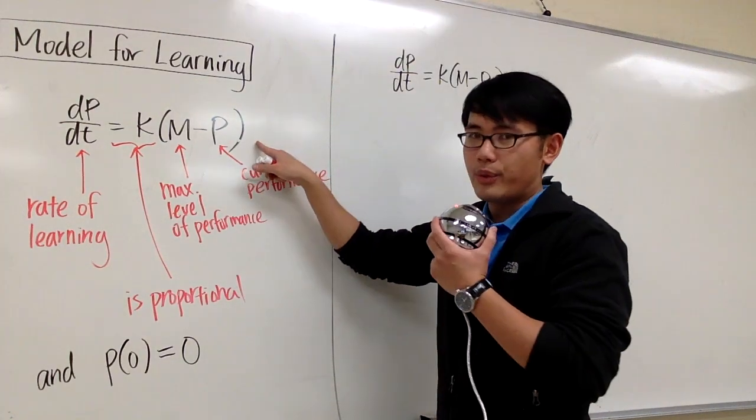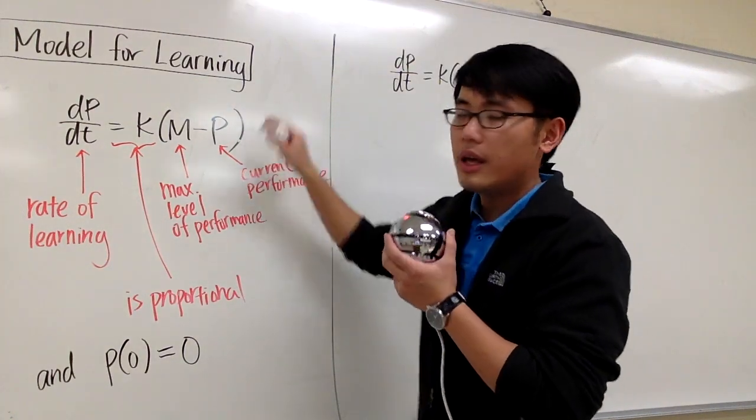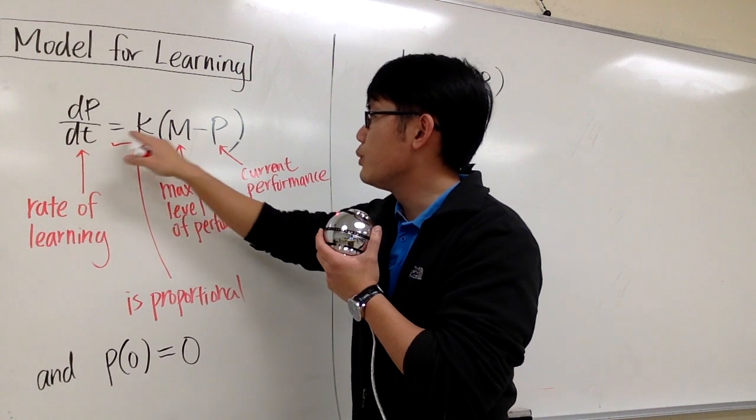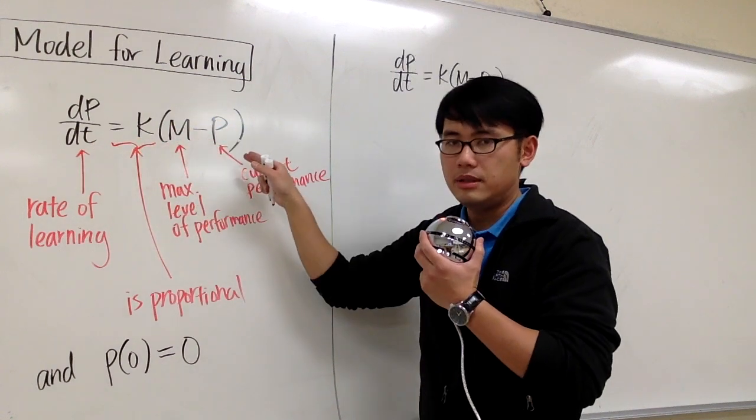Let's take a look at this differential equation, which is a model of learning, and which says dp/dt equals k times m minus p.